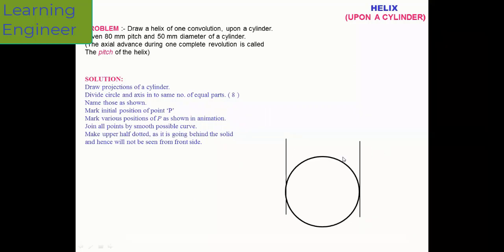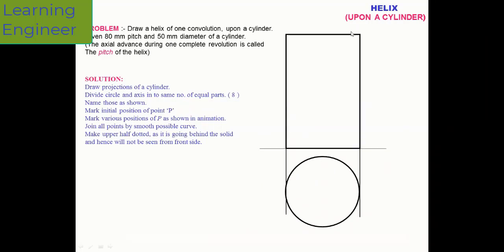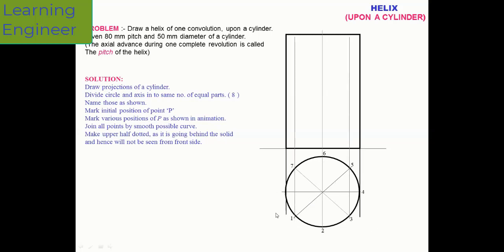First, draw a circle of 50mm diameter as given. Then draw a rectangle of 80 by 50mm — the horizontal dimension can be directly projected and the vertical height is 80mm. Divide the circle into eight equal parts and give them the naming: one, two, three, four, five, six, seven, and the last one is P.